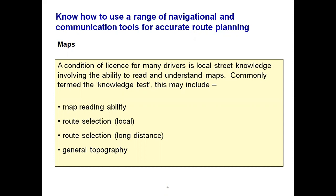A condition of licence for many drivers in England is local street knowledge, involving the ability to read and understand maps. Some local authorities use maps as part of their licensing application test — commonly termed the knowledge test. This may include map reading ability, route selection locally, route selection long distance including motorways, and general topography of your licensing area.